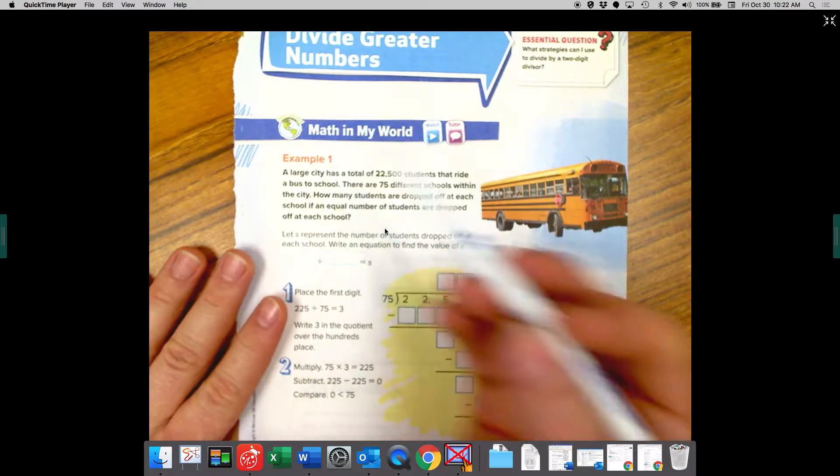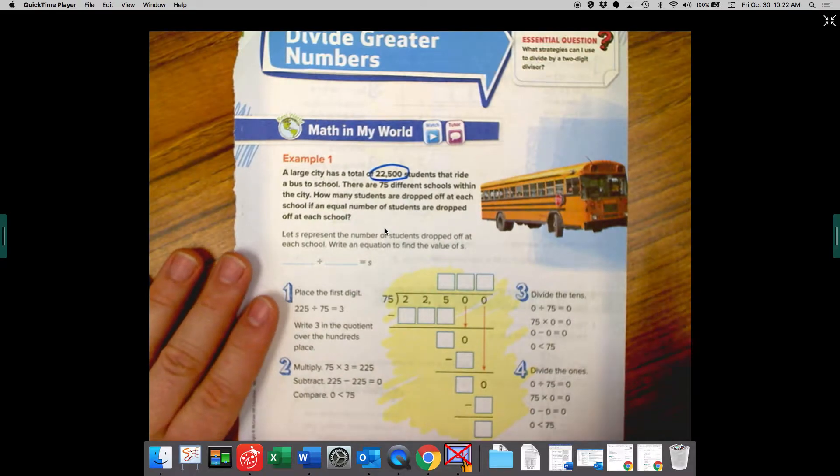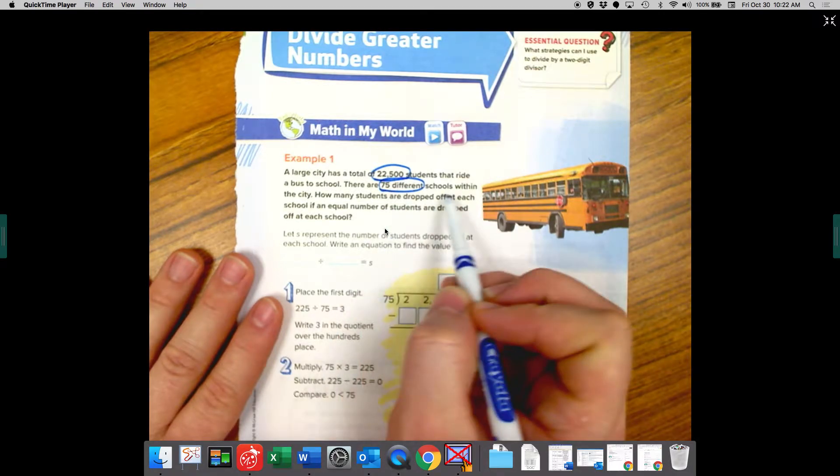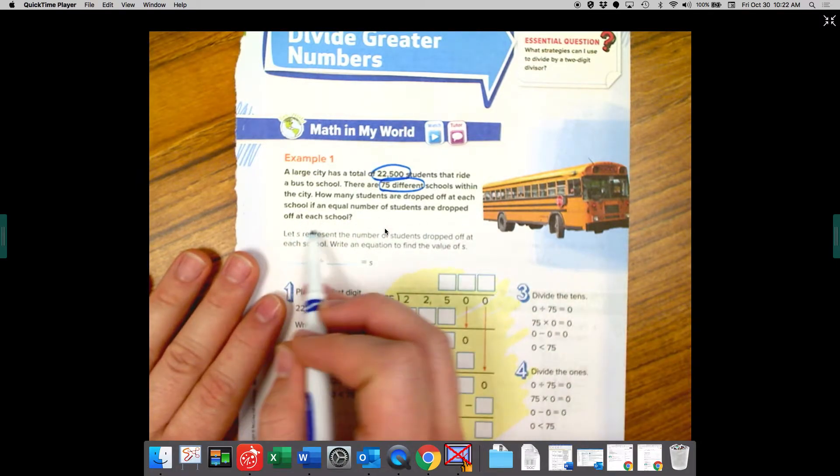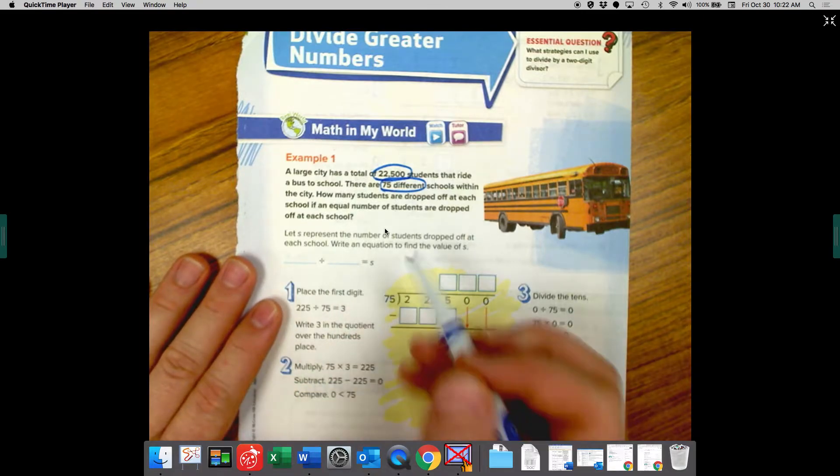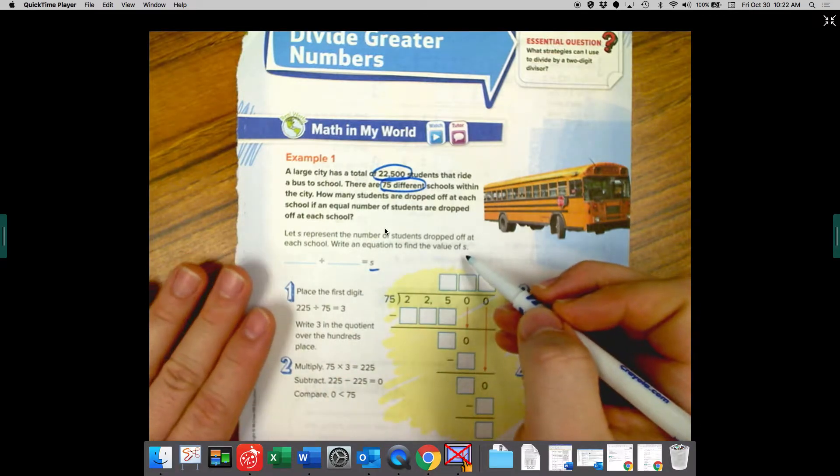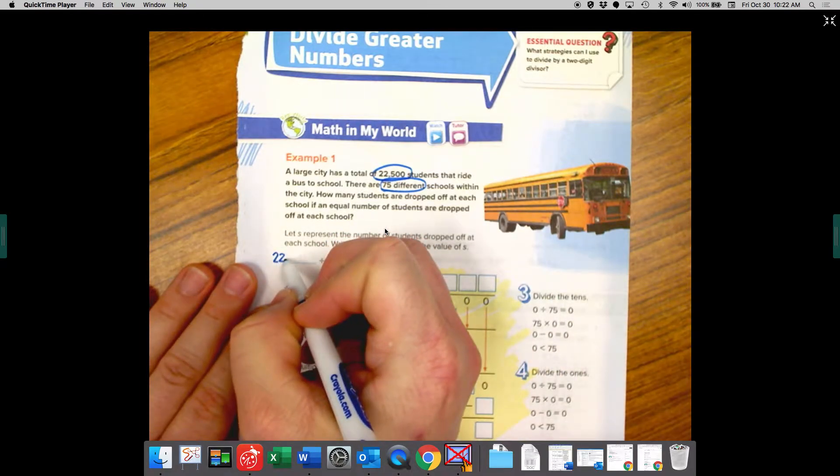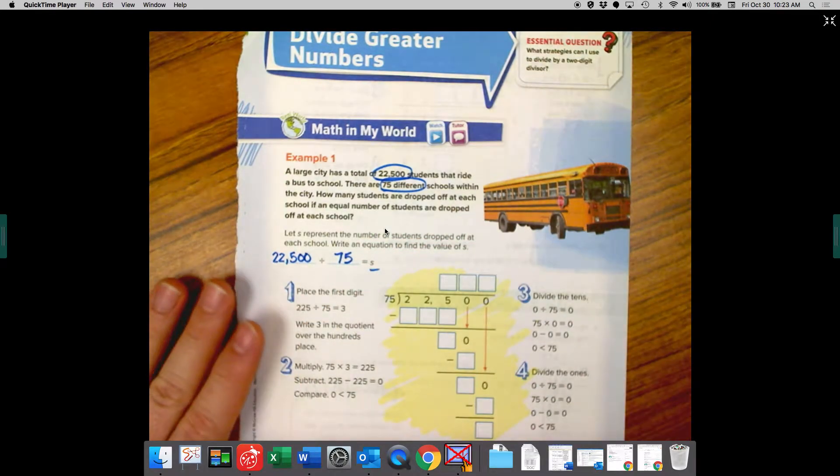So example number one, a large city has a total of 22,500 students that ride a bus to school. There are 75 different schools within the city. How many students are dropped off at each school if an equal number of students are dropped off at each school? Let s represent the number of students dropped off at each school. Write an equation to find the value of s. So we know that our problem is going to be 22,500 divided by 75 equals s.